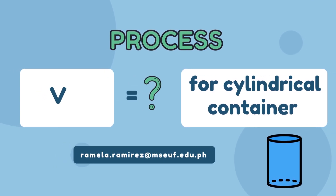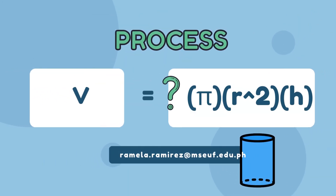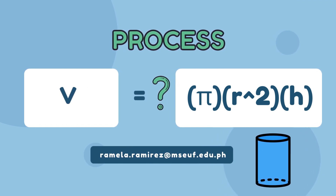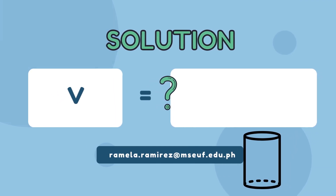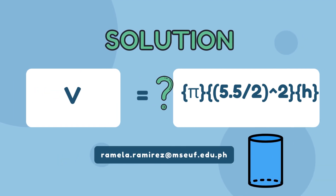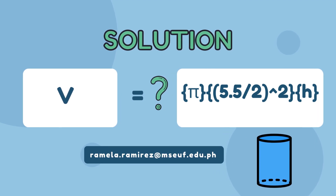Now for the cylindrical container, the volume equals pi times r squared times h, where pi equals 3.1416 and r is the radius. The volume of the cylindrical container is therefore V equals pi times (5.5/2) squared times h.